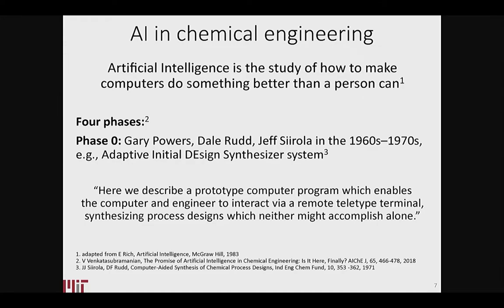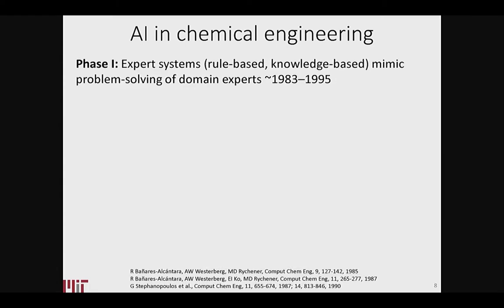Phase zero is the early work by Powers, Aris, Sorolla, and others, where they were already doing a lot of these kinds of ideas — in this case, adaptive initial design. And if you look at what's in the quotes right from the work of their papers, you're like, wow, that sounds exactly like AI. And that was back in the 60s and 70s.